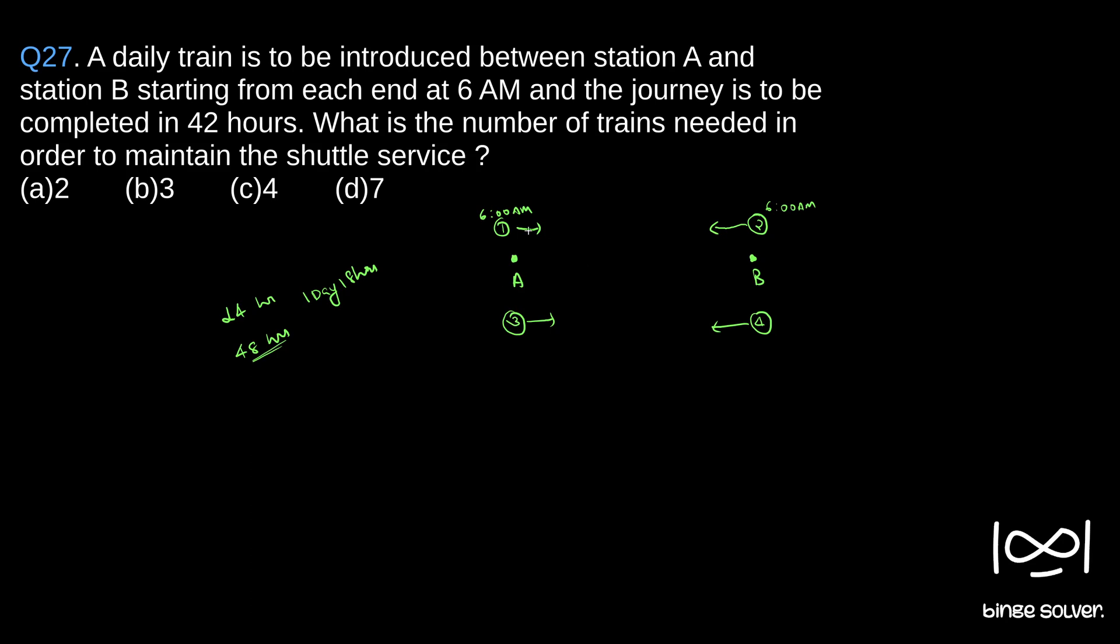On the second day, train 1 reaches train B. So it can travel from B to A. So we don't need another train on the second day from B to A. And similarly, second train reaches A. So we can have train to travel from A to B in second day.